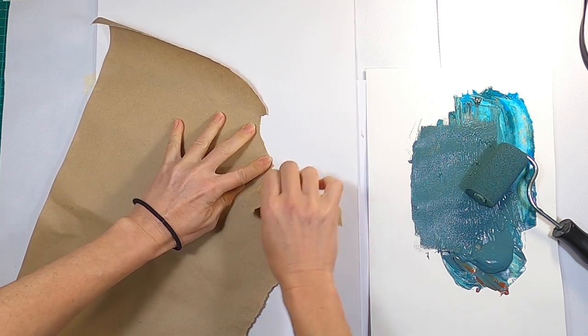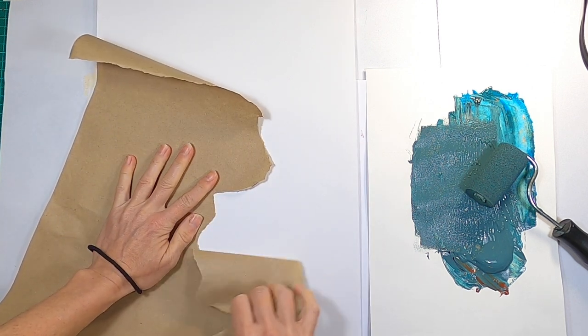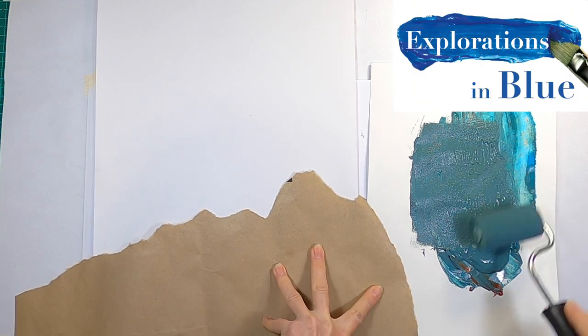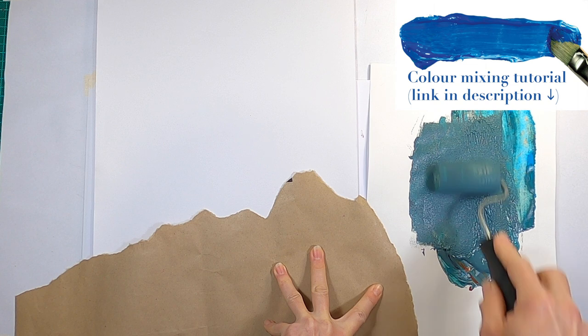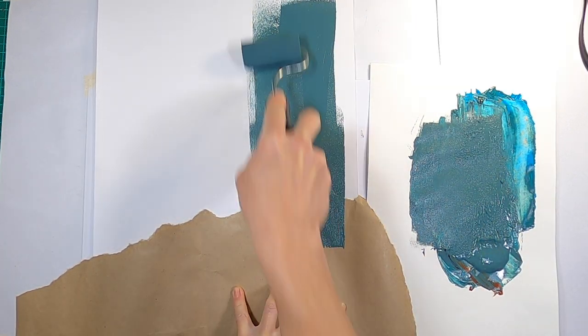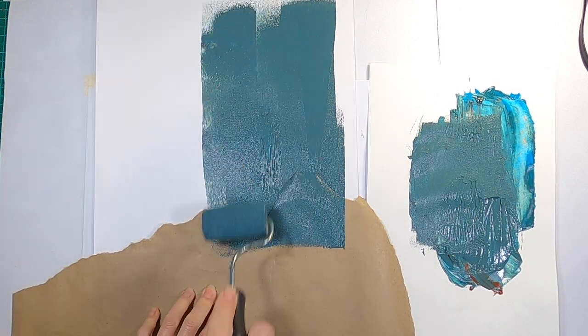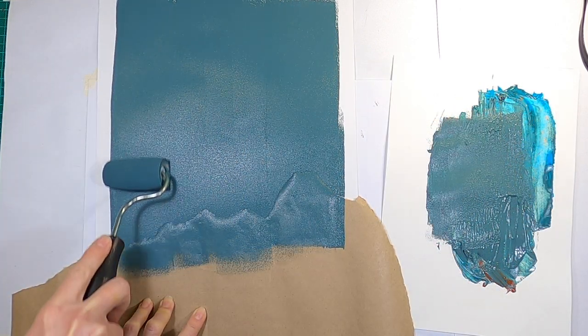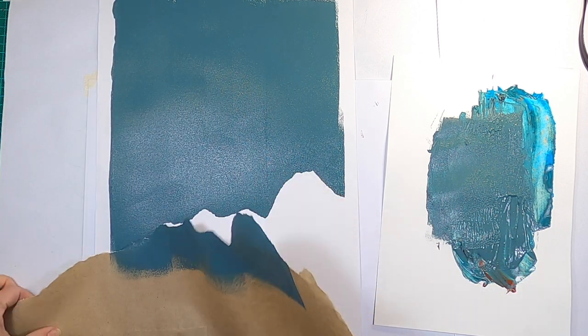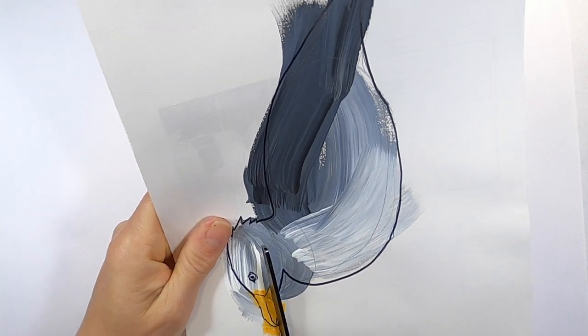Tear some scrap paper to form a rocky edge. Place it along the bottom of a blank page, and use a sponge roller or a large brush to paint from the stencil up the page. Make sure you roll or brush always from the stencil up, so no paint goes under the stencil. Remove the stencil to reveal the rocky edge, then leave it to dry. Now you need to neatly cut out your bird.